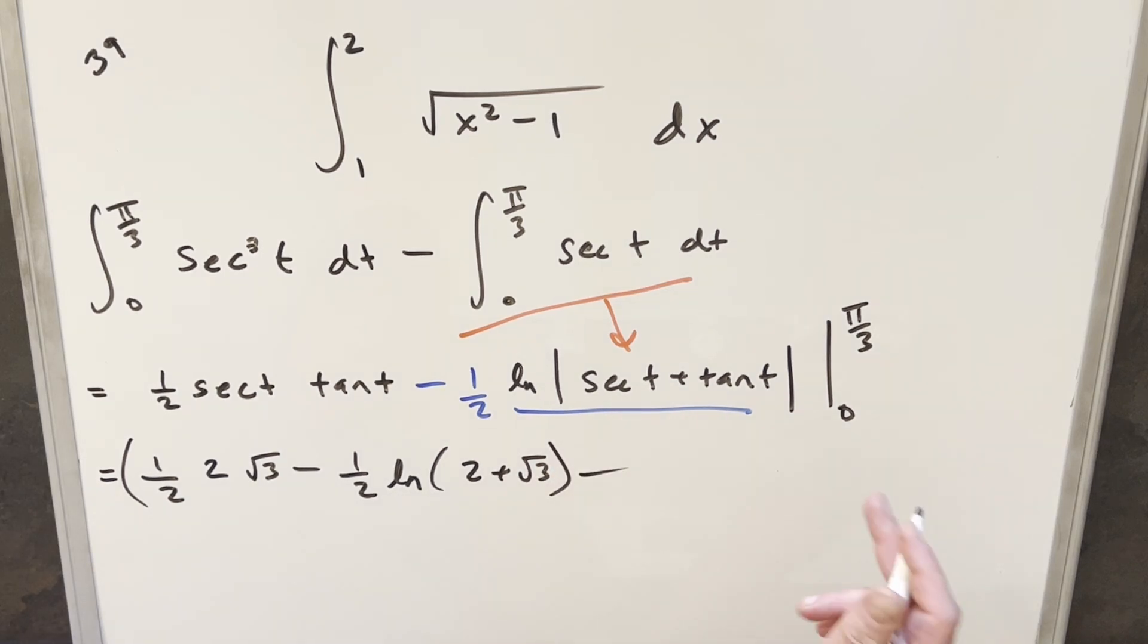And then for the next part, plugging in 0. Well, tan at 0 is 0. So that first piece is going to just give me a 0. And then here for the next part, we'll have half natural log. Secant at 0 is just 1. Tan at 0 is just 0. But natural log of 1 is just 0. So this whole last part is just going away. This is all 0.